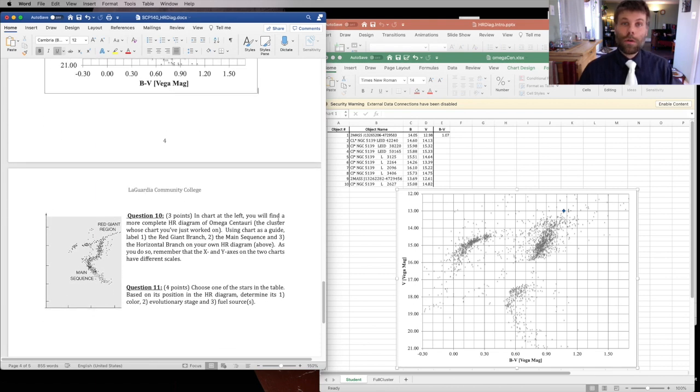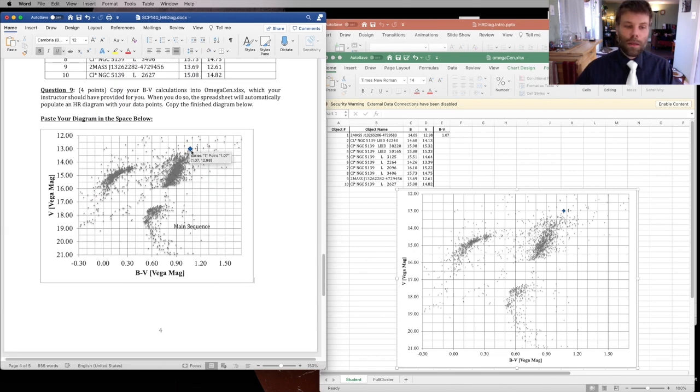And then the last thing that the lab asks you to do is to choose one of those 10 stars that you graphed and to figure out their color, their evolutionary stage, and their fuel sources based on their position on the diagram. So star number one, which I've plotted, is more or less towards the right-hand side of the diagram. It's got relatively high value, which means that that star is red. Let's imagine for the moment, just as an example, that number one was not up here, but instead was down here on the main sequence. Then I would say that the evolutionary stage of star number one is a main sequence star. And we know that the fuel source for a main sequence star is hydrogen fusion in its core. And that's going to be different from red giant branch stars and also from horizontal branch stars. So that's how you'd answer the final question.